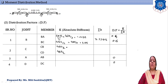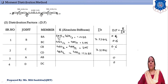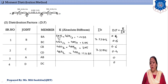At joint C, span CB has L = 2 m so stiffness = 4EI/2 = 2EI, and span CD has L = 3 m so stiffness = 4EI/3 = 1.33EI. Summation ΣK = 3.33EI. Distribution factors: DF(CB) = 2/3.33 = 0.6 and DF(CD) = 1.33/3.33 = 0.4.